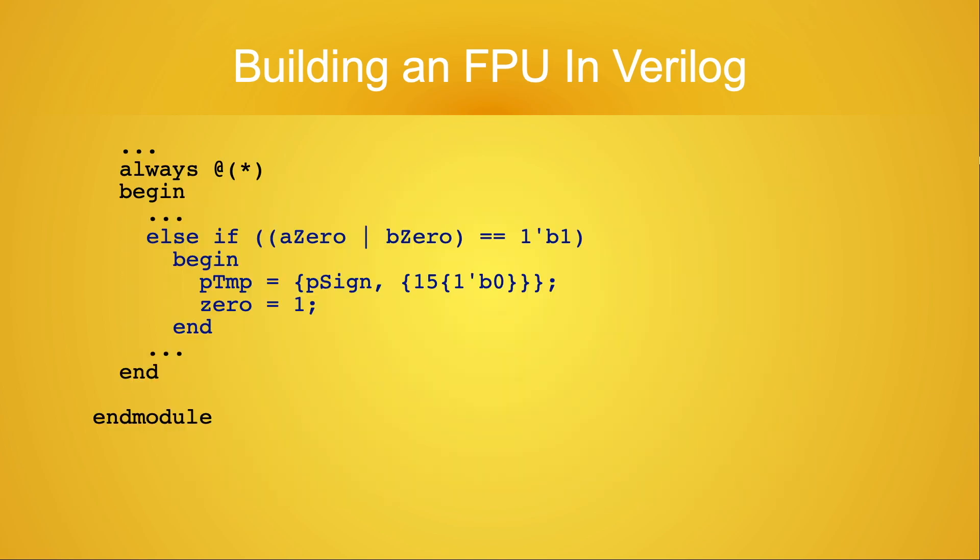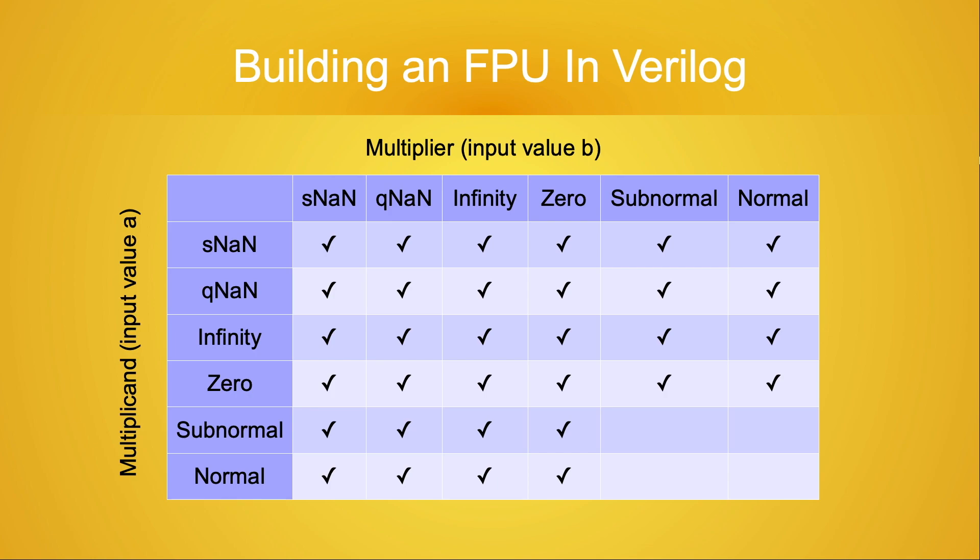Remember that the IEEE standard supports both positive and negative 0. So when constructing our 0 value, we have to use the value of p_sign in our final result. Having completed multiplying by 0, our checklist is getting really close to being completed.